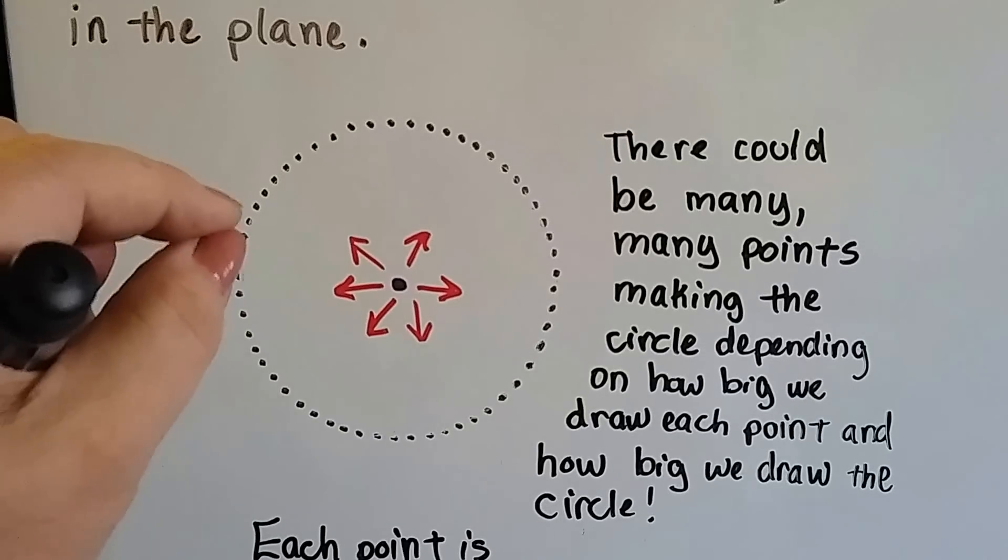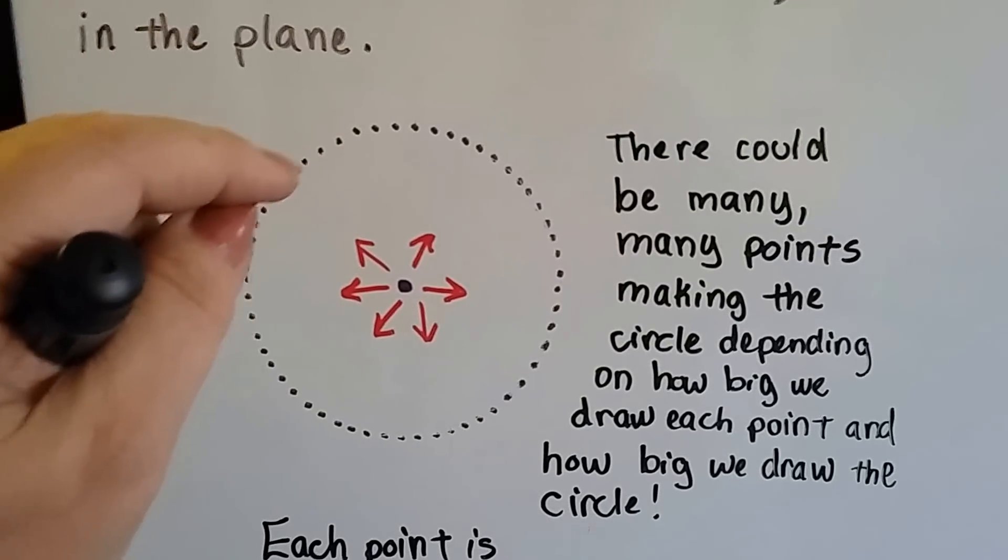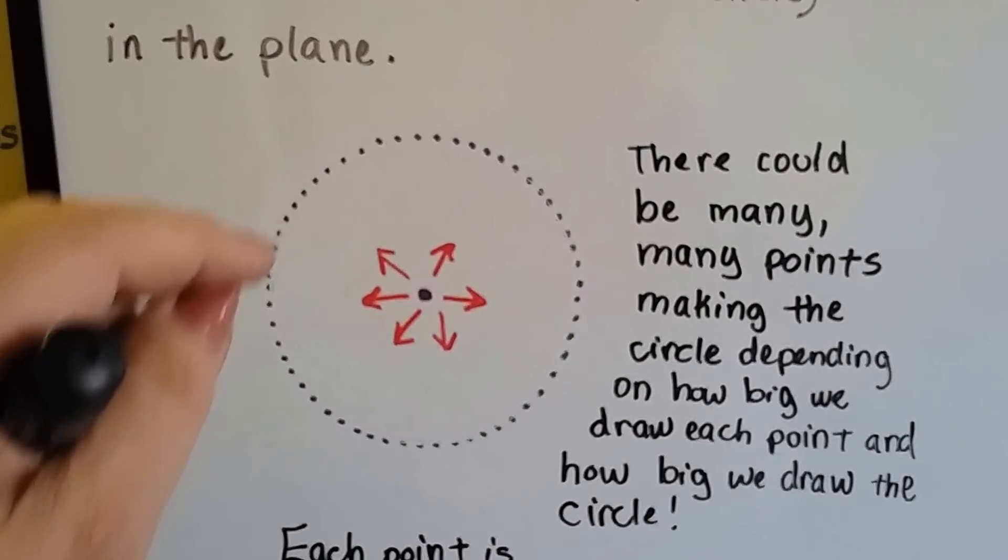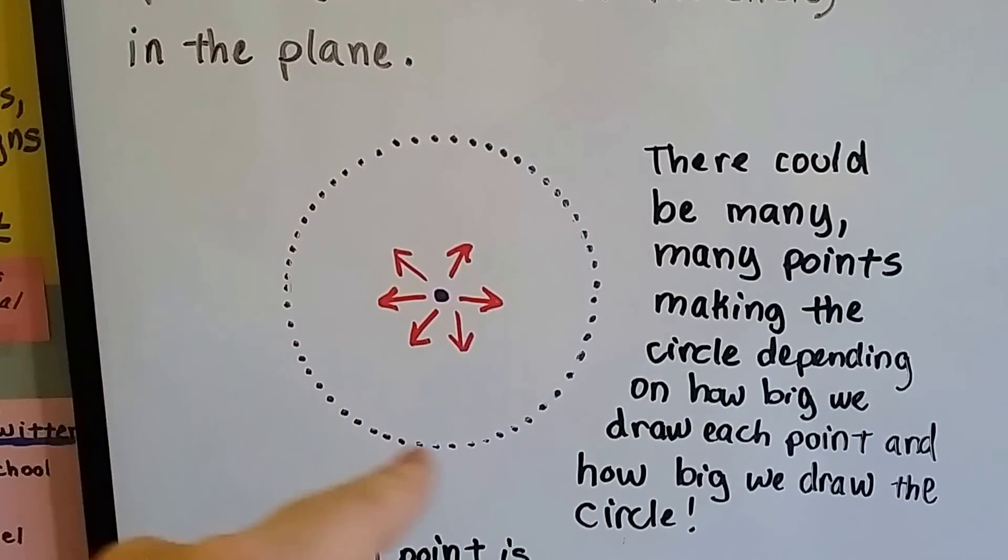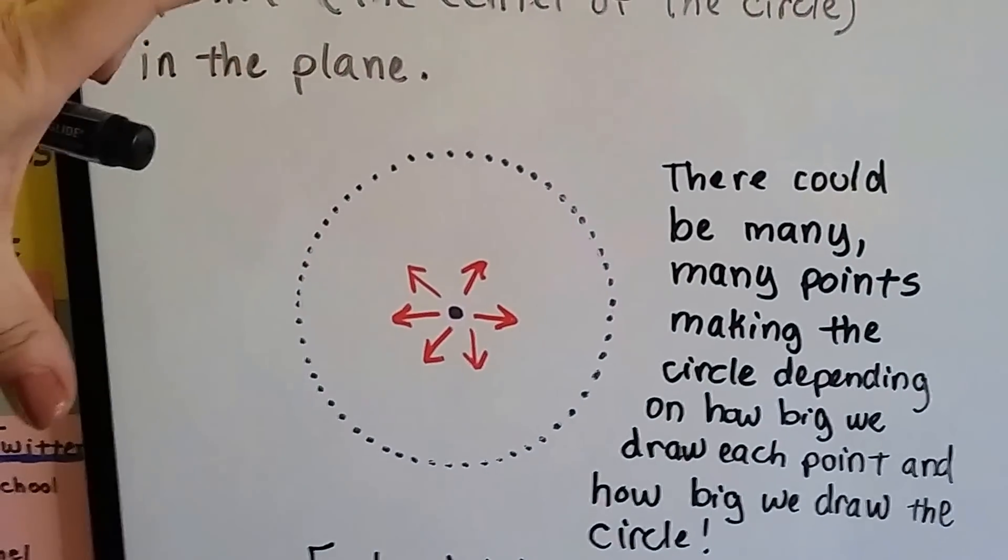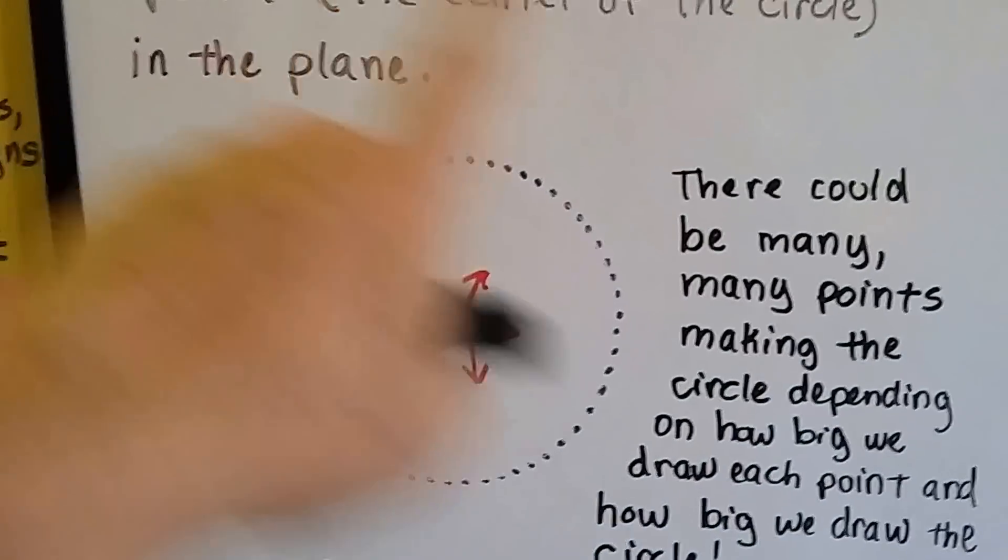I could have used a very fine tipped pencil, and I could have put a lot more points in here. But I used a fat marker so it doesn't look like I had as many. And I could have made the circle much bigger. That would have made a lot more points.